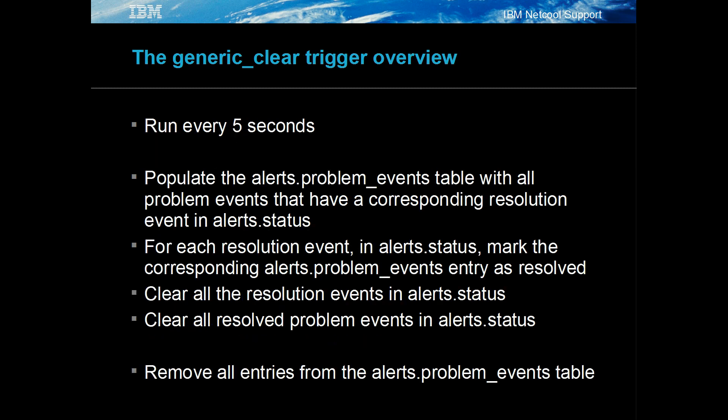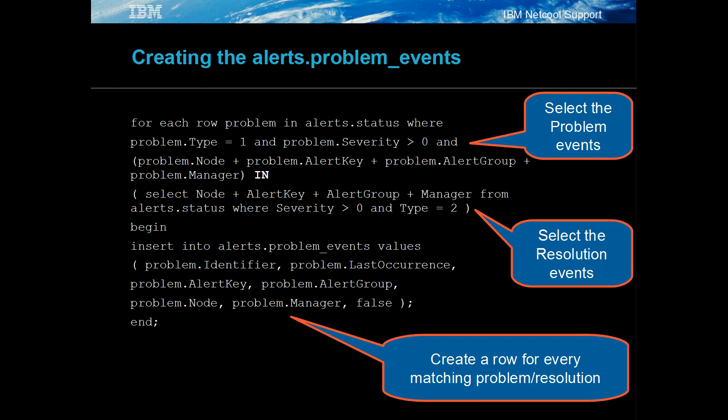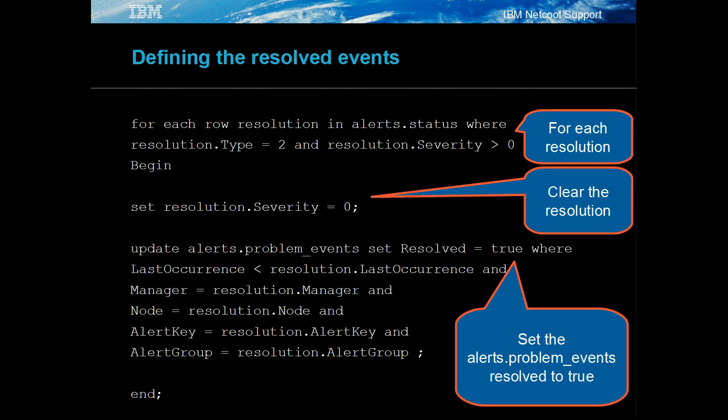The generic clear trigger runs every 5 seconds by default, in which time it matches all the resolution events with their corresponding problem events based on their generic clear fields. It checks to see if any of the resolution events clear any of the problem events. It clears all the resolution events and any matching problem events, performing these tasks using a temporary table called alert.problem_events. The trigger first selects all the problem events that have the matching resolution event and inserts these into the alert.problem_events table. Each resolution event is cleared and used to set the resolved field to true in the alert.problem_events table based on last occurrence and the generic clear fields.